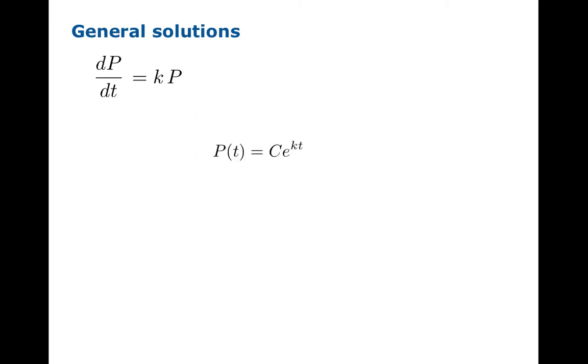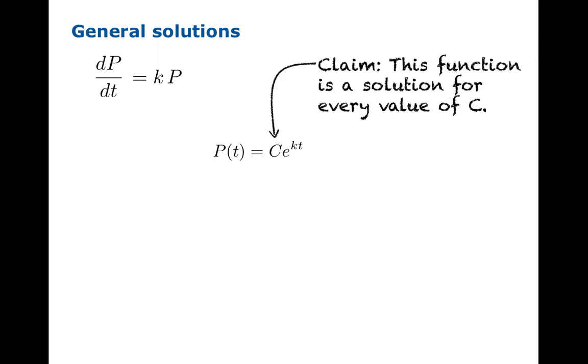So, let's look at the function p of t equals c e to the kt. k is the constant that shows up in the original differential equation. c is a new constant we're throwing into the picture. And our claim is that this function is a solution to the differential equation for every value of c. Now, how can we check that? In this case, it's very simple. We'll just take the derivative,